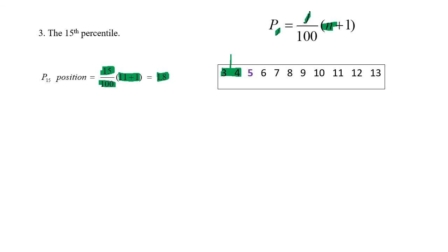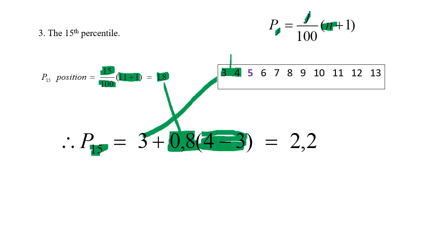Now, how would I go about getting the final answer? Again, I use the same approach as before. P15 is equal to—where does this 3 come? I've got two positions, 3 and 4. This is the first position, which is 3. Then I have the 0.8. Where does the 0.8 come from? This 0.8 is coming from here, where it's 0.8 more than the first position. Where am I getting this 4 minus 3 from? This 4 minus 3 is simply the two values that I'm dealing with. The two values I'm dealing with is the 4 and the 3. And I end up with my final answer of 2.2.